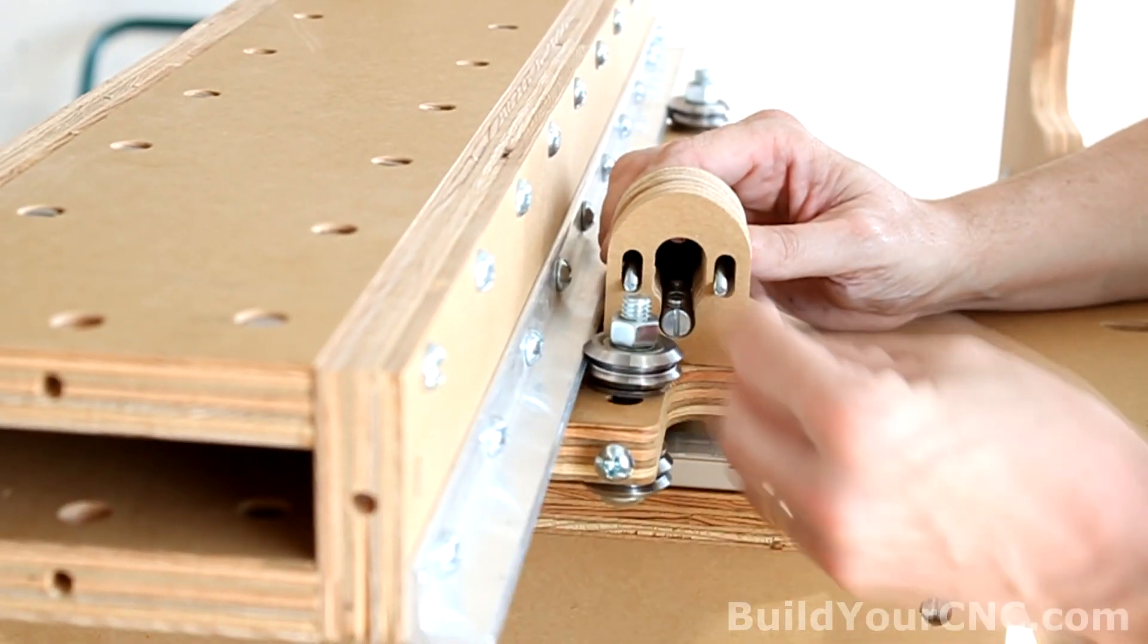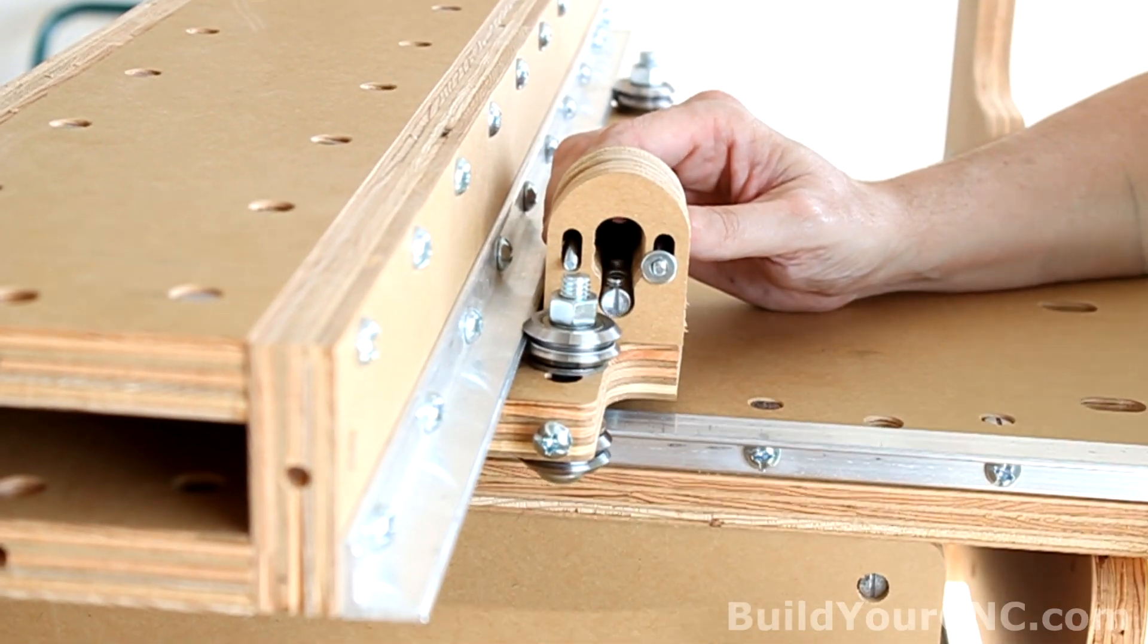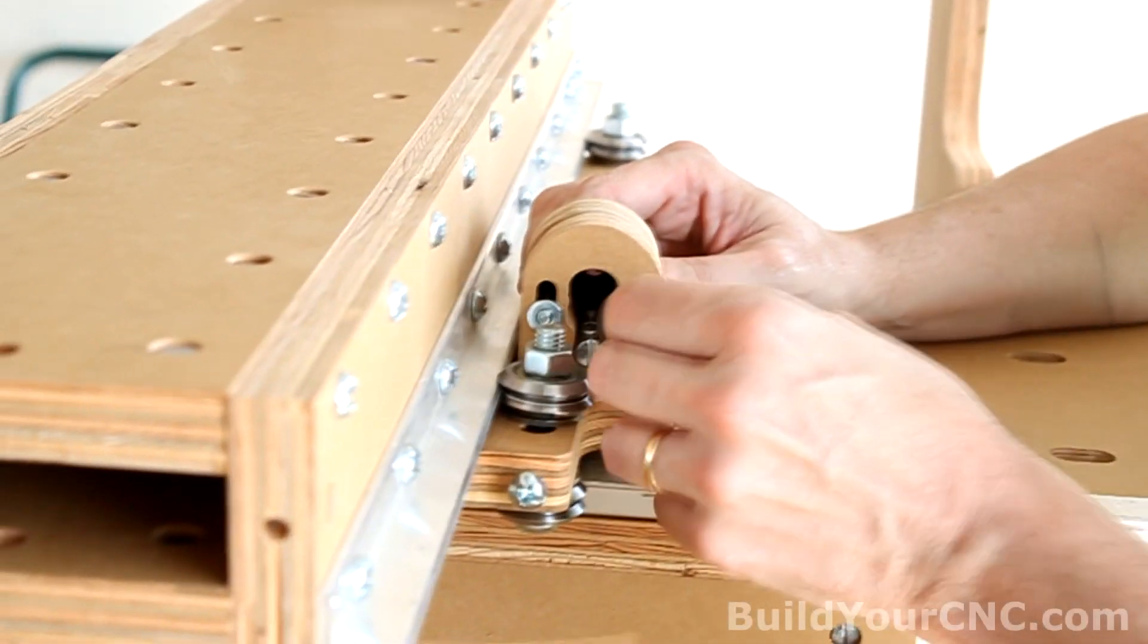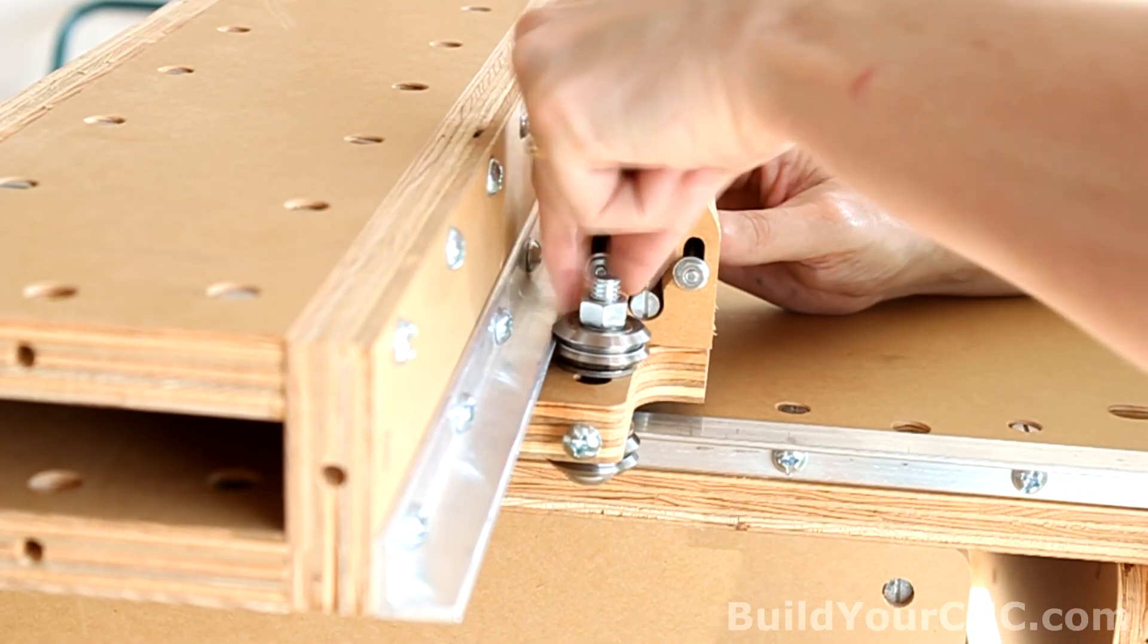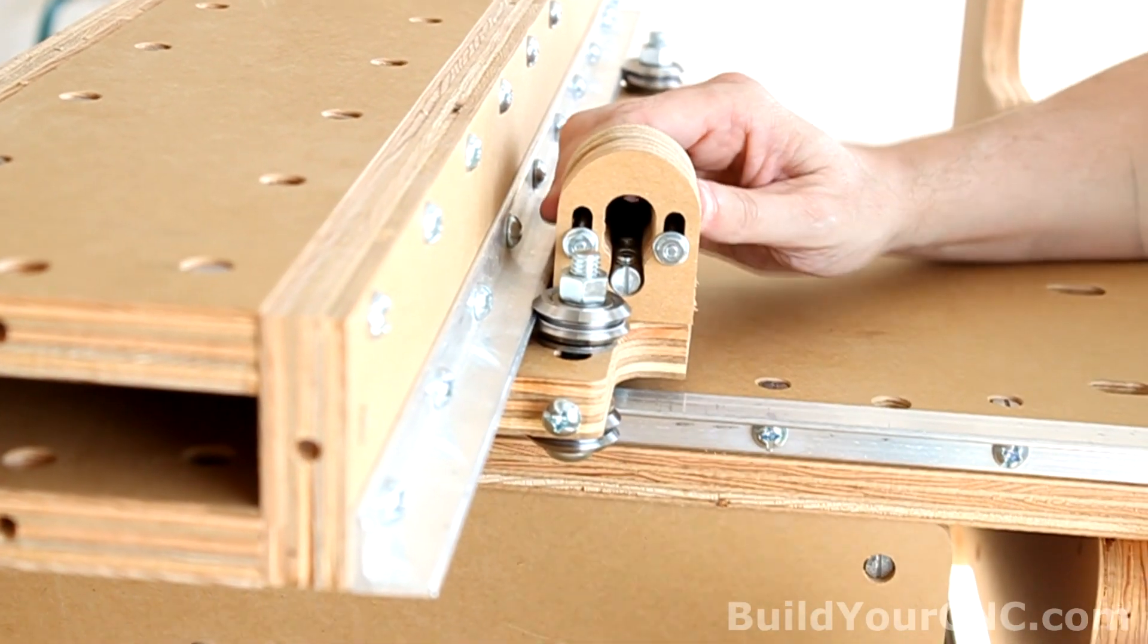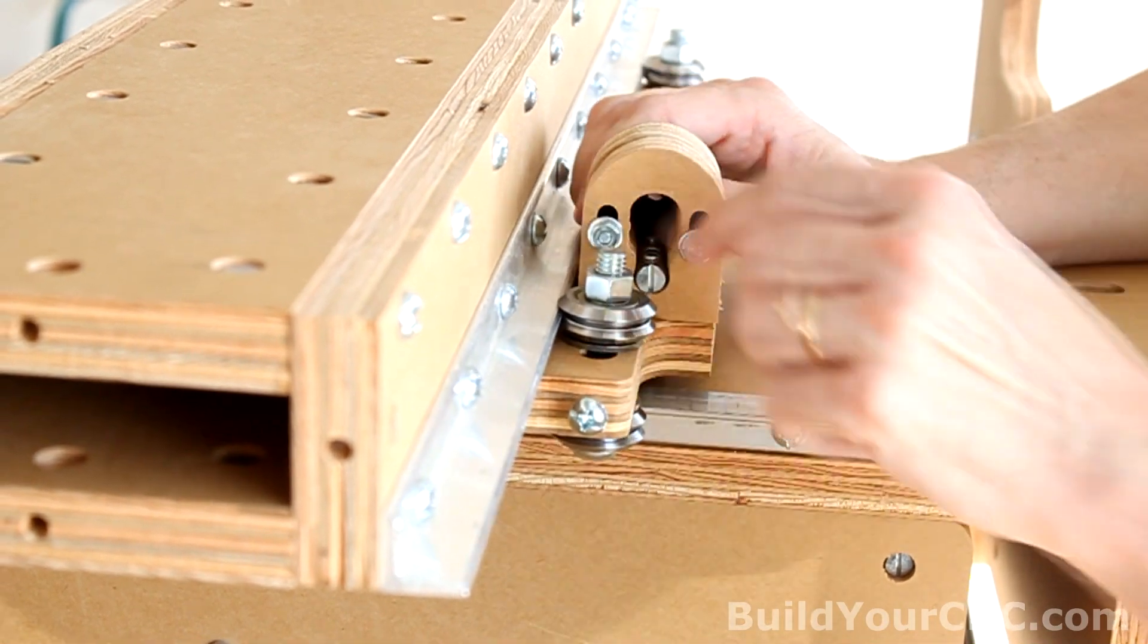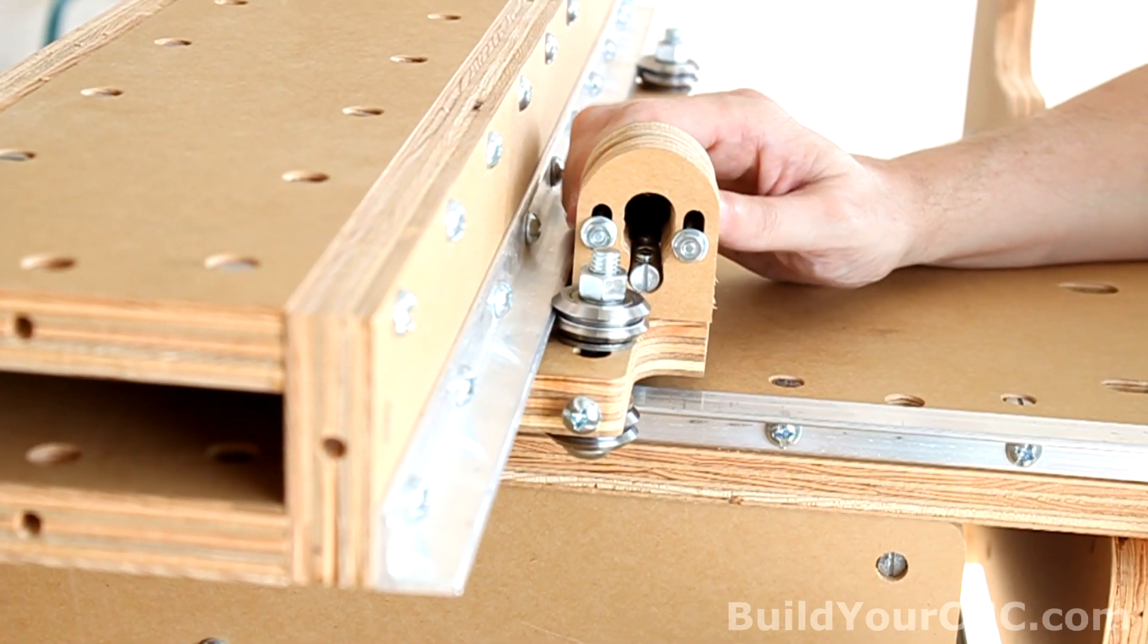Now we're ready to put on a washer on each, and put a number 8 nut to fasten it. Leave it slightly loose so we can still move it up and down to align the lead screw.